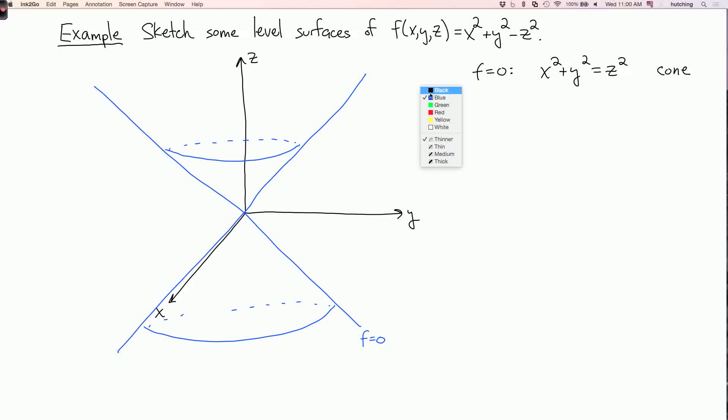Now, what if we set f equals one, for example, then I get the equation x² + y² equals z² + 1. And this is a hyperboloid.